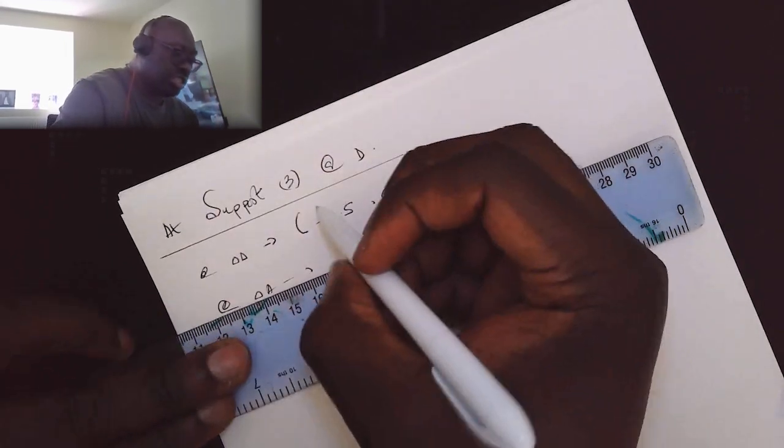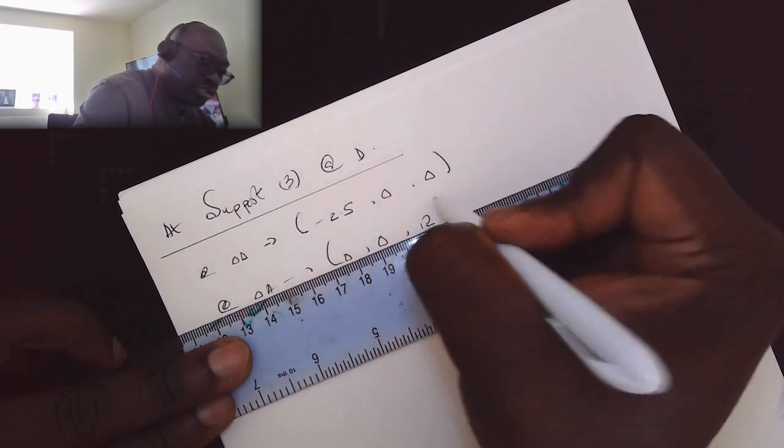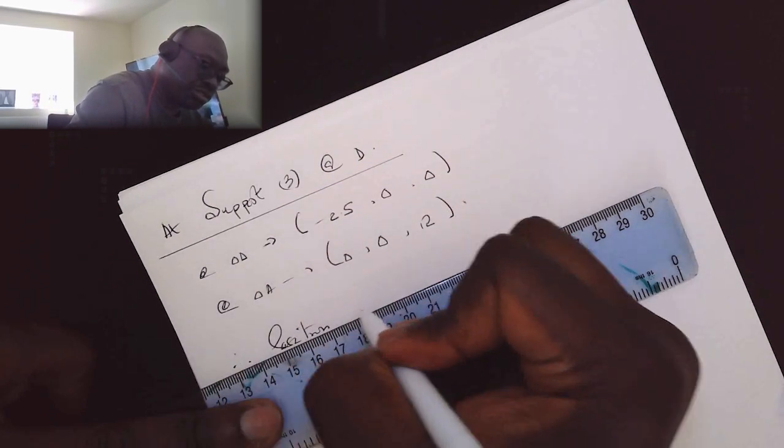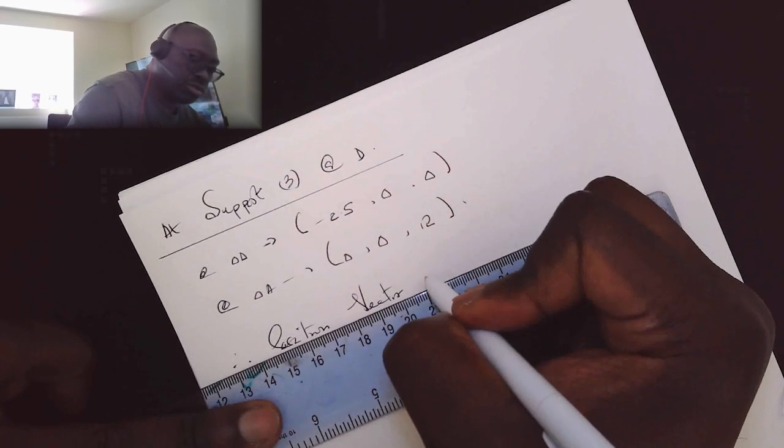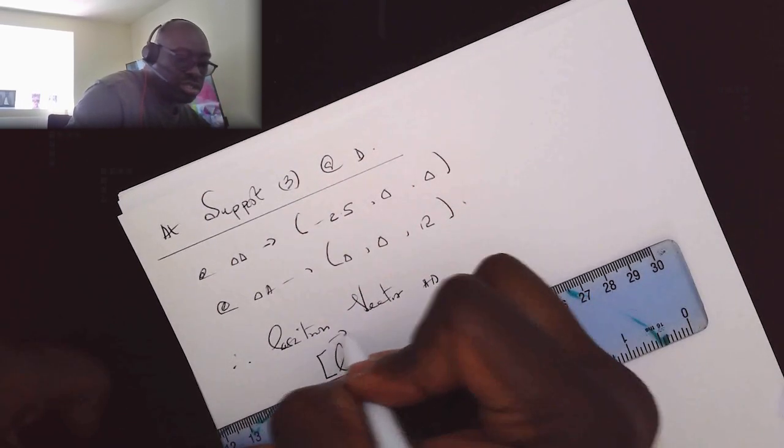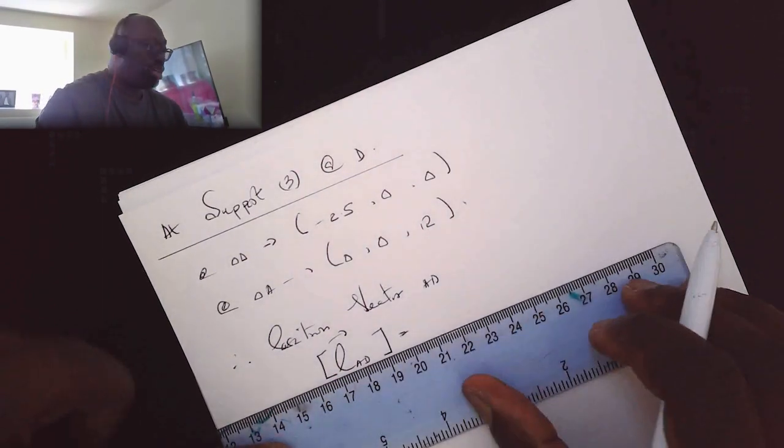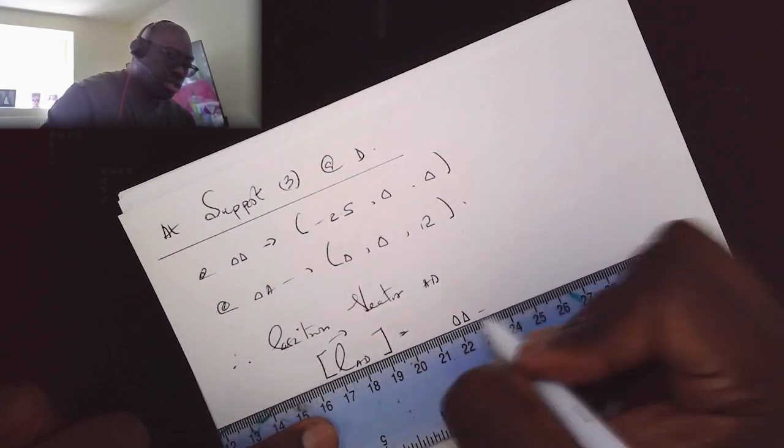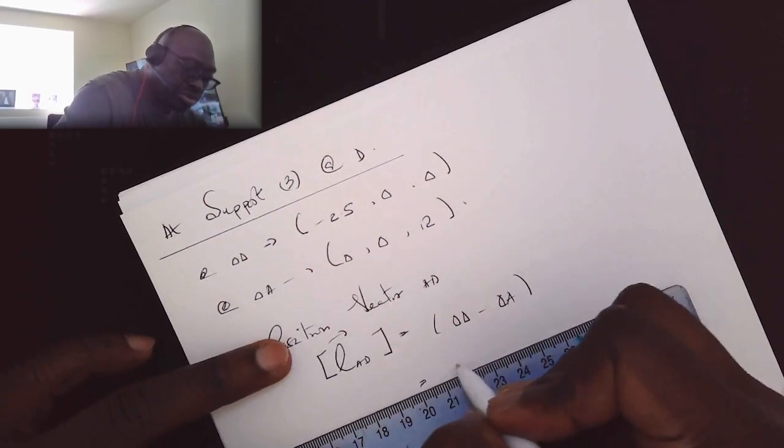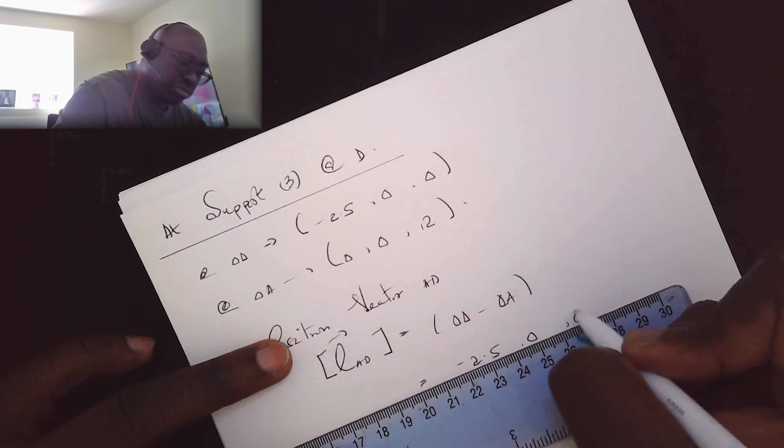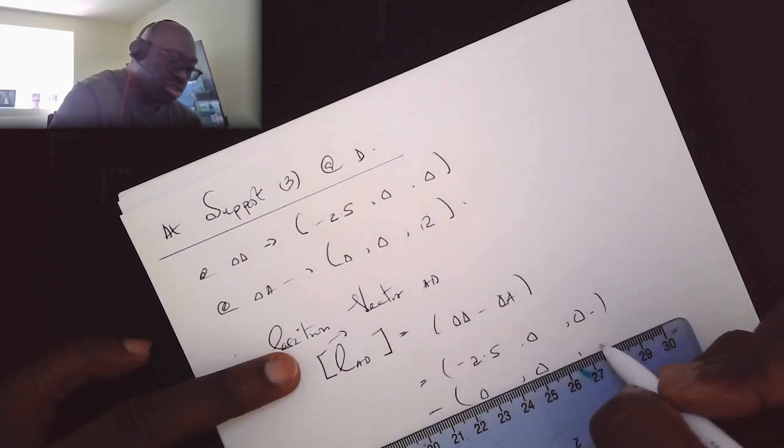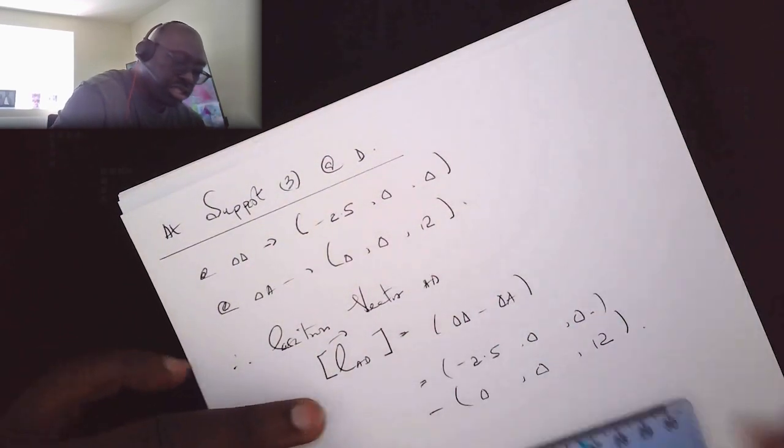This is equal to minus two point five, naught, naught, take away naught, naught, twelve. So we're just taking the difference between the respective coordinates in terms of x, y, and z. And this would give us minus two point five plus zero j, I can choose to ignore the j if I want to but I'll just put it in there just in case, and zero minus twelve is minus twelve, and that is in meters.